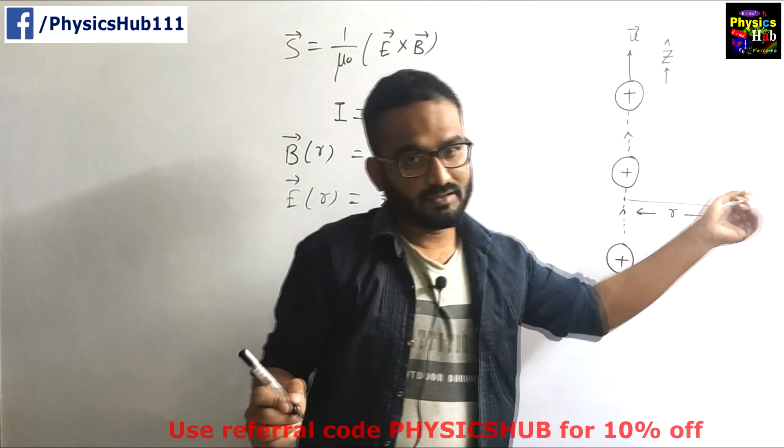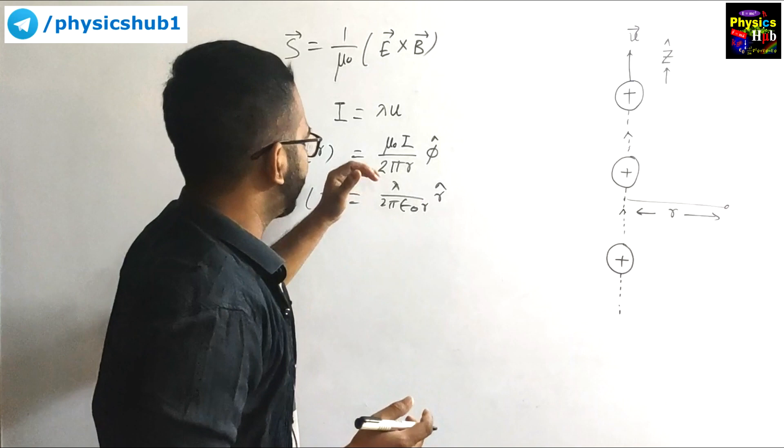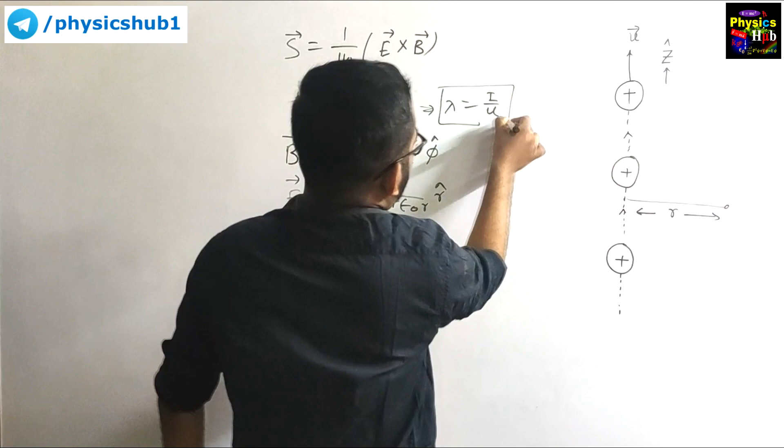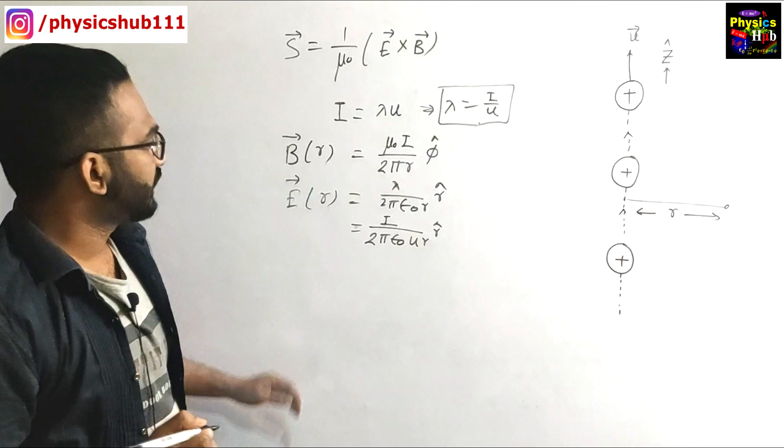Now you know lambda is not given in the question, instead you are given current I. So we have to express lambda in terms of I and u. From here we can write lambda equals to I upon u, and we can easily replace the value of lambda here. So it will become I by 2 pi epsilon naught u r in the r cap direction. Now we have got electric field and magnetic field.